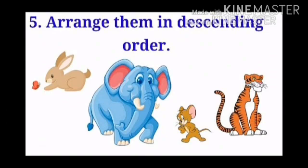Question number 5. Arrange them in descending order. Elephant is number 1. Tiger number 2. Rabbit number 3. And rat number 4. According to their sizes.